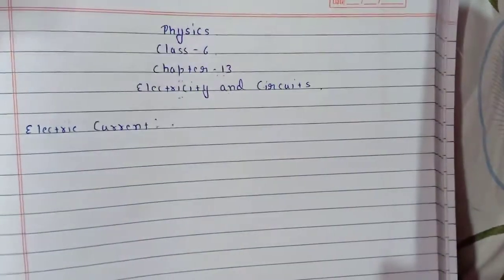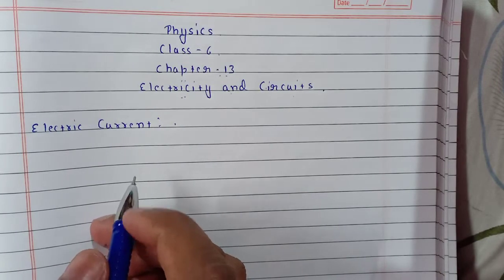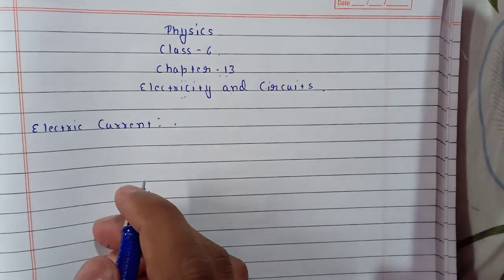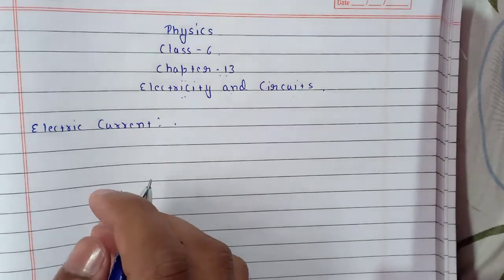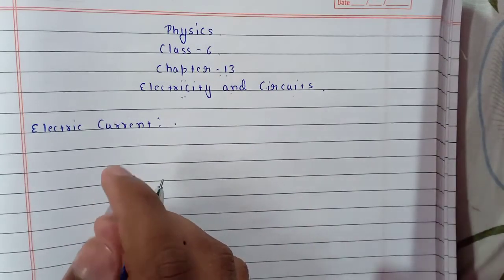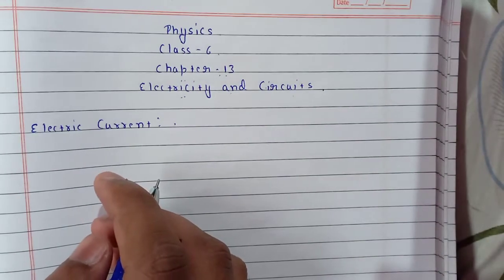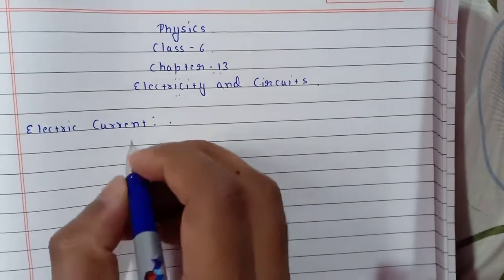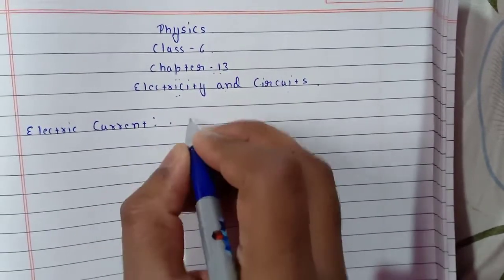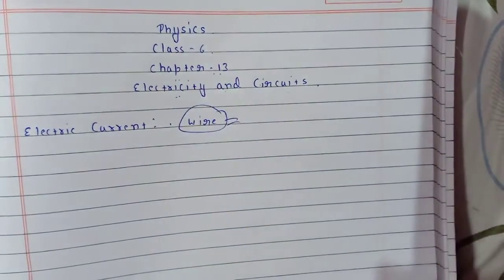Electric current. Now, this question comes first: what do you think makes the bulb glow when wires are connected? When the wires are connected, why does the bulb shine? What is present that makes it glow? There must be something flowing inside the wires.